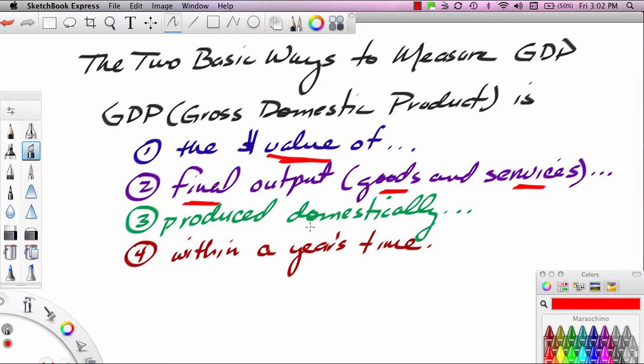Thirdly, the output that will be included in GDP needs to be domestic output. In other words, we're interested in a measure of domestic productivity and we want to exclude the value of any output that was produced outside the geographic boundaries of the United States. So the GDP system is a system based on geography. If the output is produced within the United States, it's counted as part of U.S. output. If it's made outside the United States, it's going to be counted as the output of another country.